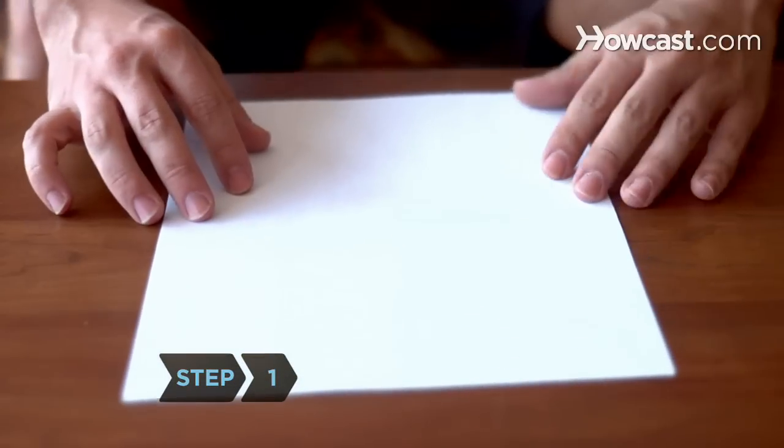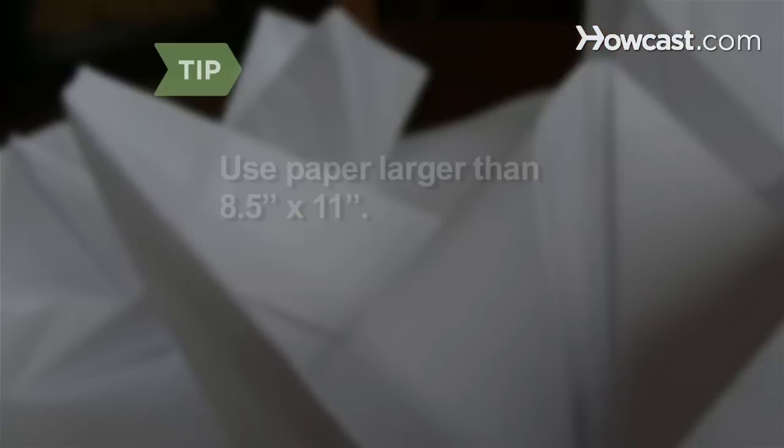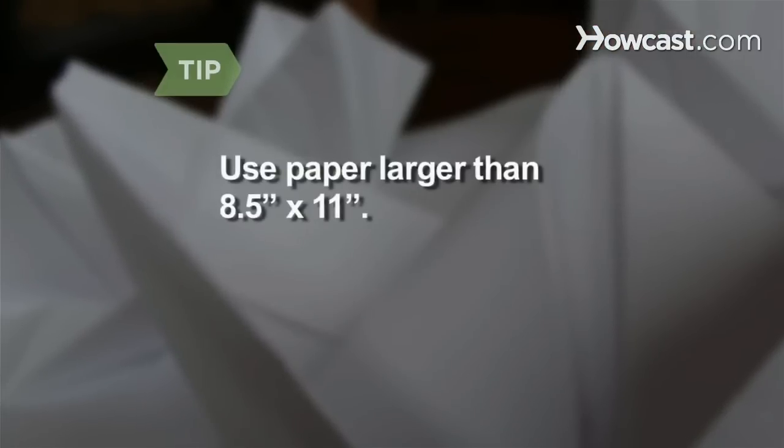Step 1. Lay the paper on a flat surface. Fold the paper in half lengthwise. Use paper larger than the standard 8.5 by 11 inch size for a larger boat.